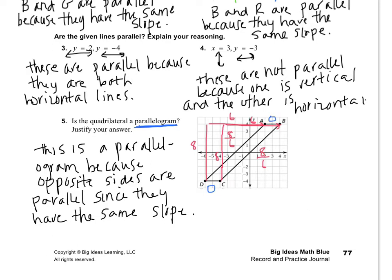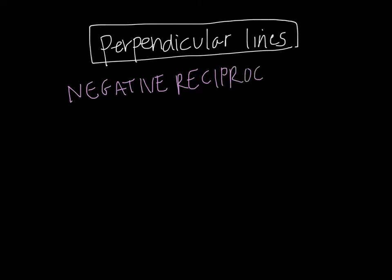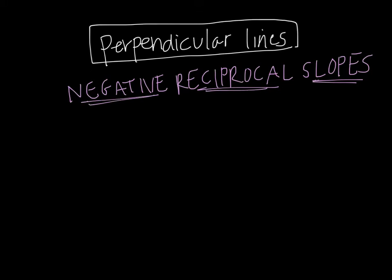Let's check out perpendicular lines. The rule for perpendicular lines is that they have negative reciprocal slopes. Not just negative, not just reciprocal — negative reciprocal together.